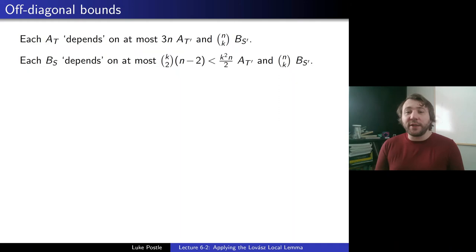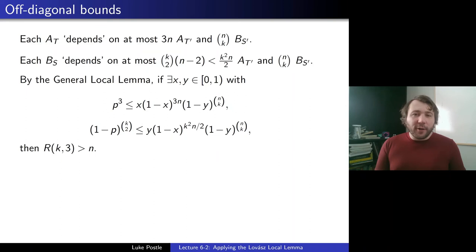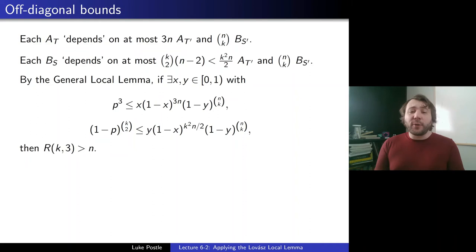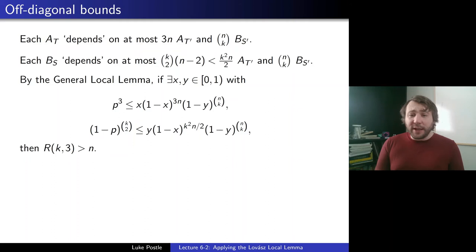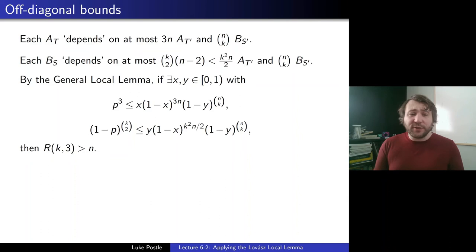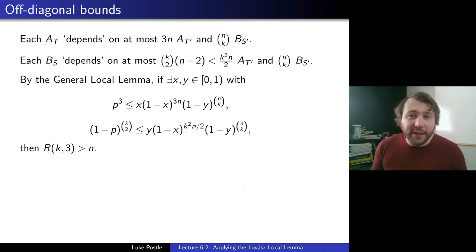We can apply the general Local Lemma if we can find x and y in [0,1). Choose one x for each triangle and y for each k-set. The conditions become: p³ ≤ x·(1−x)^(3n)·(1−y)^(n choose k), and (1−p)^C(k,2) ≤ y·(1−x)^(k²n/2)·(1−y)^(n choose k). If those conditions hold, none of the monochromatic events happen, and we conclude R(k,3) > n.